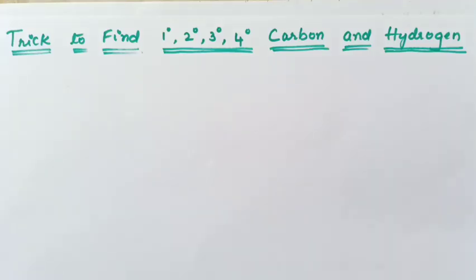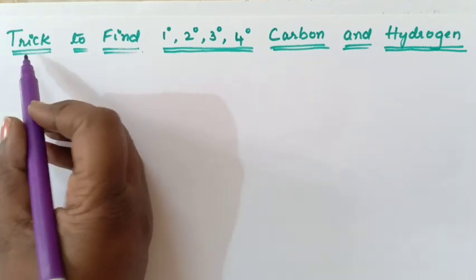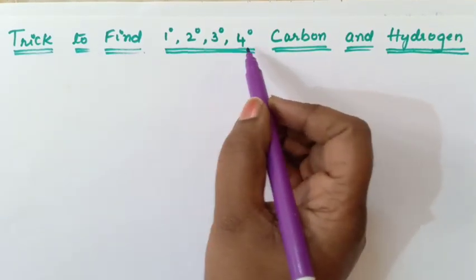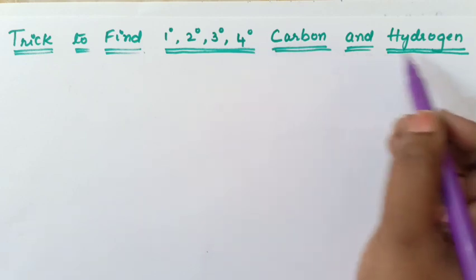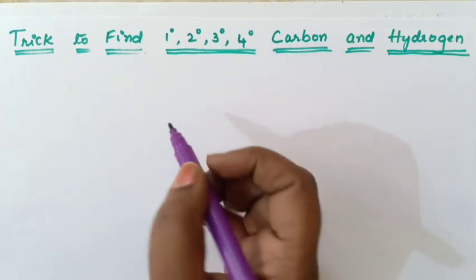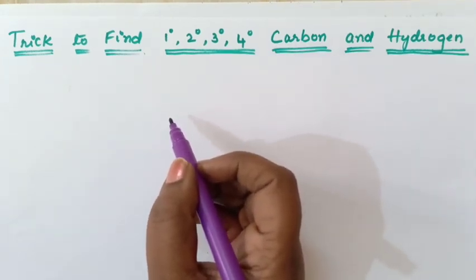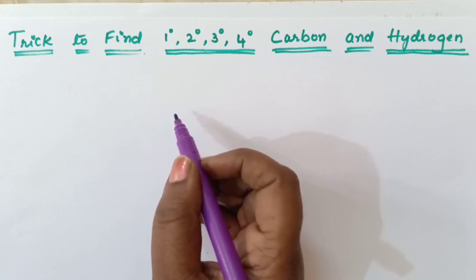Hello students, welcome to Ishwari Tanisha channel. This is your Ishwari ma'am. In this video we are going to learn a trick to find primary, secondary, tertiary, quaternary carbon and hydrogens. These are the basics in organic chemistry which you need to learn in order to understand further complicated topics.